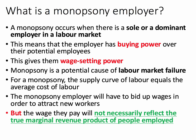Typically, if the supply curve is upward sloping, the monopsony employer will have to bid up the wage in order to attract new workers. But — and here's the key point — the wage they pay is not necessarily reflective of the true marginal revenue product of the people they've employed.